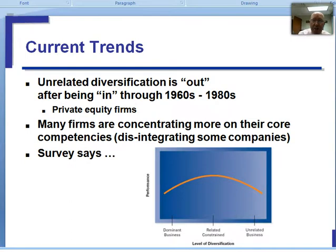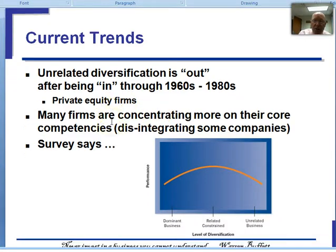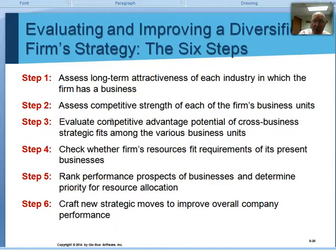Unrelated diversification is not favored as much today, although as we showed with Danaher and private equity firms, some firms are doing this very profitably. We also talked about how firms are tending to be focused on their core competencies — people are being very aggressive about holding them to this better off test. And if we aren't sure that they're better together, then let's split them off.